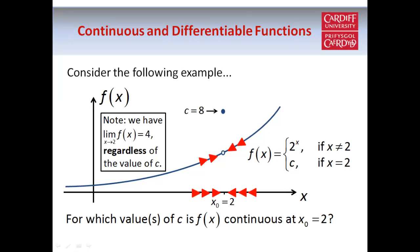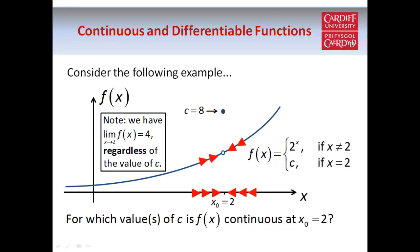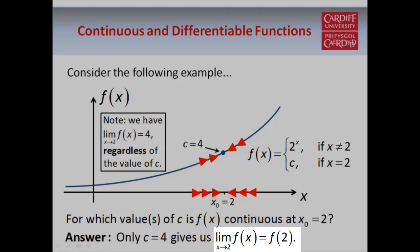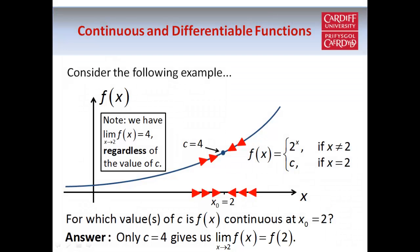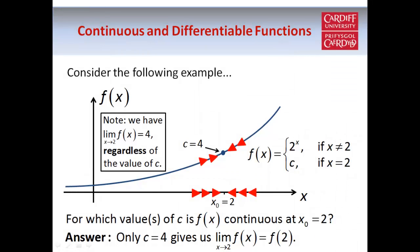Since the limit as x → 2 equals 4 regardless of c, the only thing we can control is the value of the function when x = 2. So to make f(x) continuous at x₀ = 2, the only choice is c = 4, because that's the only way to ensure the limit equals f(2), satisfying the definition of continuity. And from the graph, c = 4 is clearly the only way to make the function a continuous curve with no gaps. In the second part of this tutorial, we'll move on to differentiable functions and look at further examples.